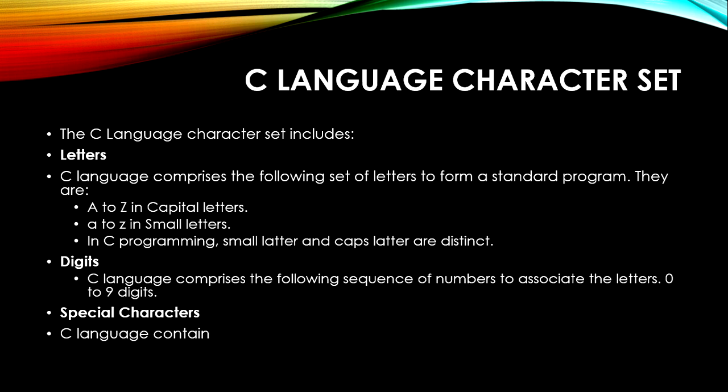Let's first discuss the C language character set. The C language character set includes letters, digits, and special characters. C language comprises the following set of letters to form a standard program: A to Z capital letters and A to Z small letters. In programming, small letters and capital letters are distinct.